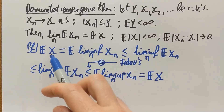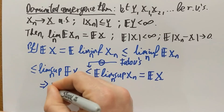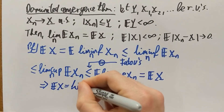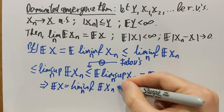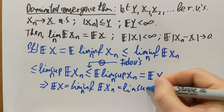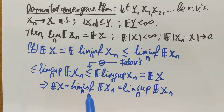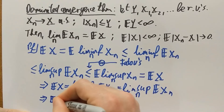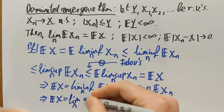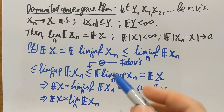Now if I look at the two ends of this inequality, the limit inferior of E[Xn] bounds from below the limit of the Xn's, and the limit superior is bounded from above by the same E[Xn]. So it follows that the limit inferior of E[Xn] must equal the limit superior, which means the limit exists and is equal to E[X].